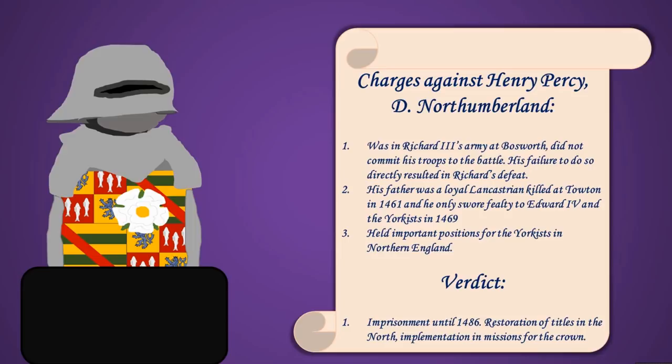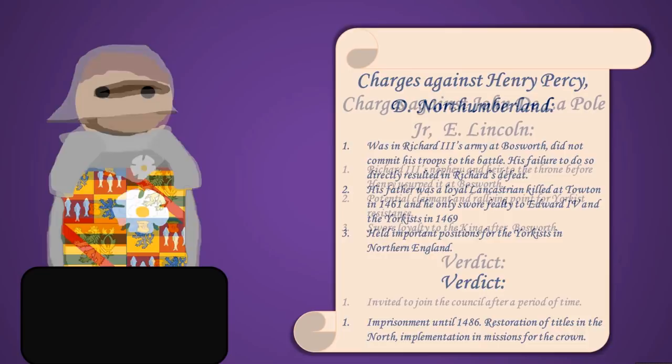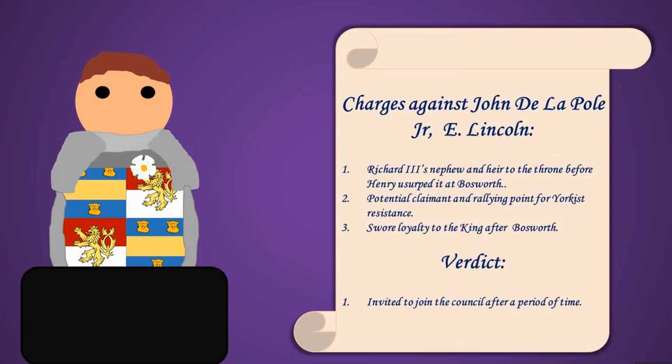The next person was John de la Pole Jr., the Earl of Lincoln. He was Richard III's nephew and crucially his named heir — Richard III's own son had died and he named this nephew as heir to the crown. So he was a potential claimant and rallying point for Yorkist resistance. He swore loyalty to King Henry after Bosworth and wasn't sent to prison — possibly to show Henry was willing to forgive people on the other side — and was actually invited to join the council after some time.